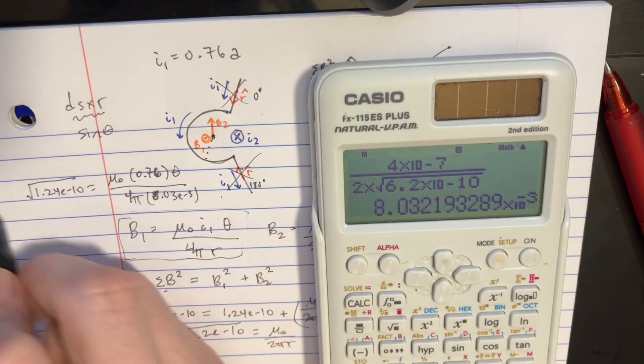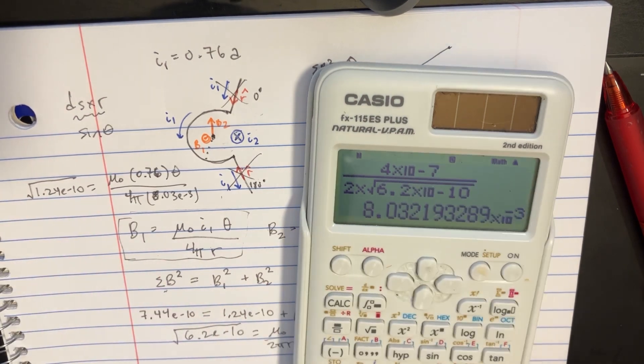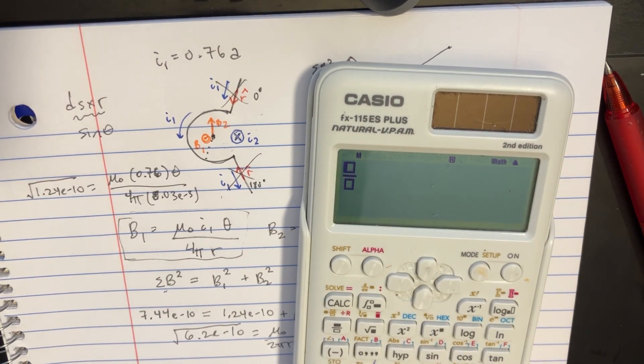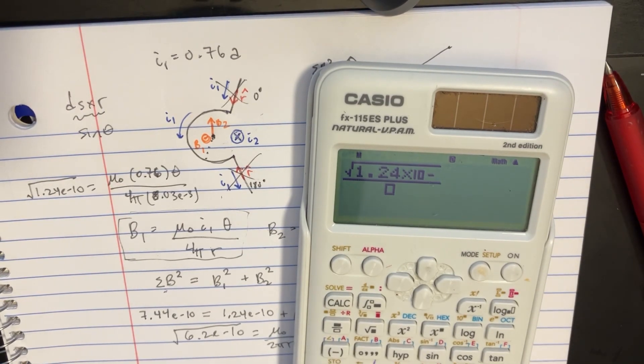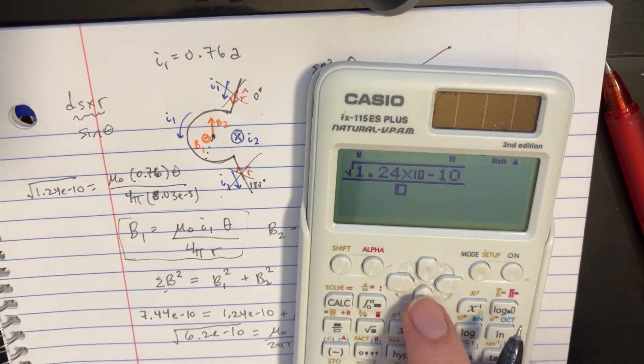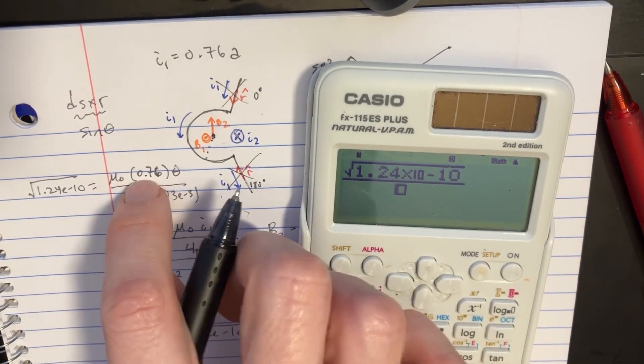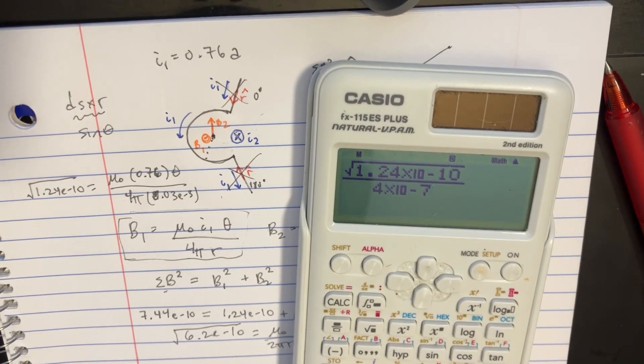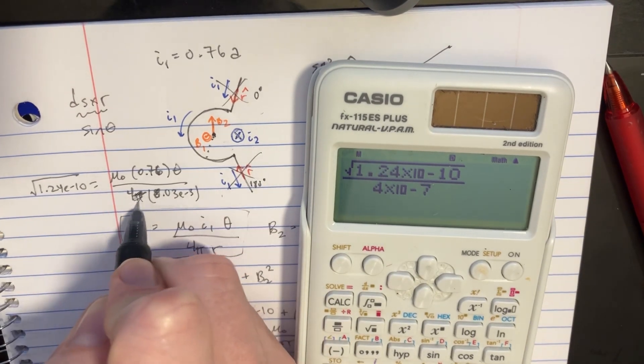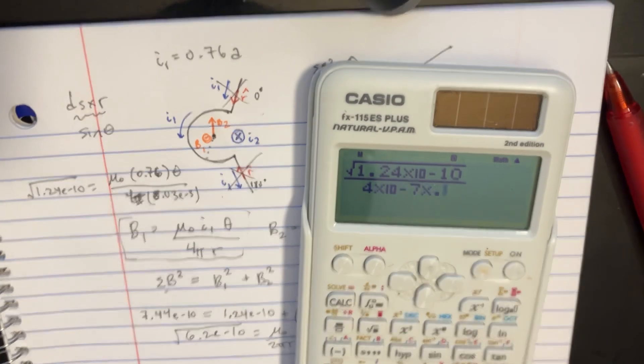Let's put 4 pi and that thing on the other side. So we'll just kind of set this up like this. Square root of 1.24, negative 10. On the bottom, we can put this stuff. This will go on to the bottom. 4, e to negative 7. Let's get rid of the pi. And then times 0.76.